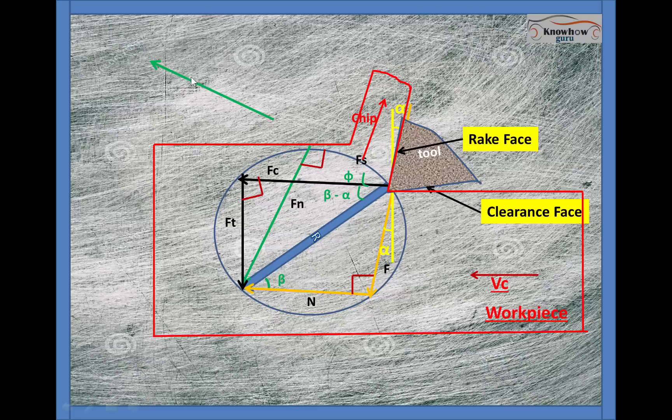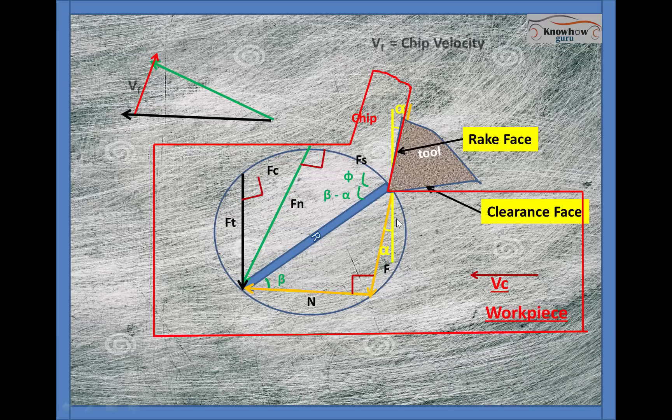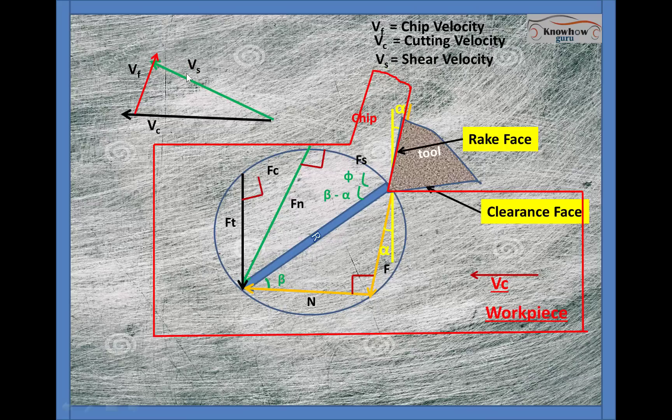The next one I am going to extract the chip flow velocity component and the third one I am going to take the cutting velocity component. Now we will name it accordingly. Usually we are denoting chip flow velocity by Vf, Vc as a cutting velocity and Vs will be the shear velocity.